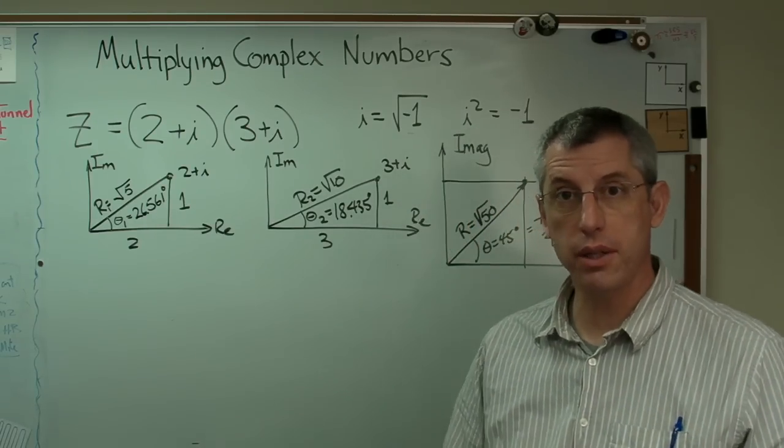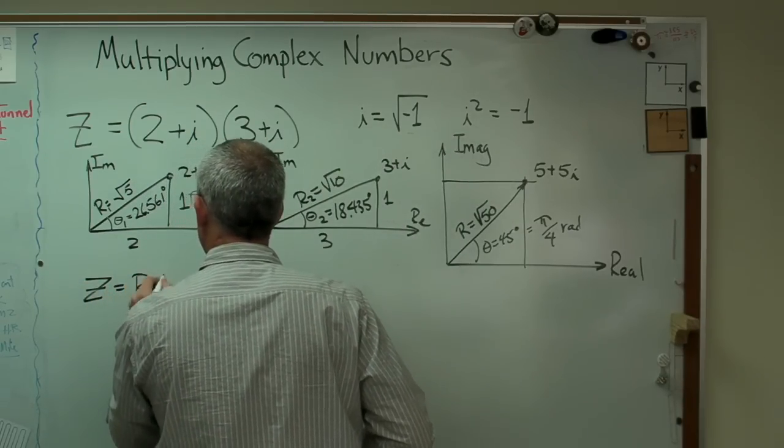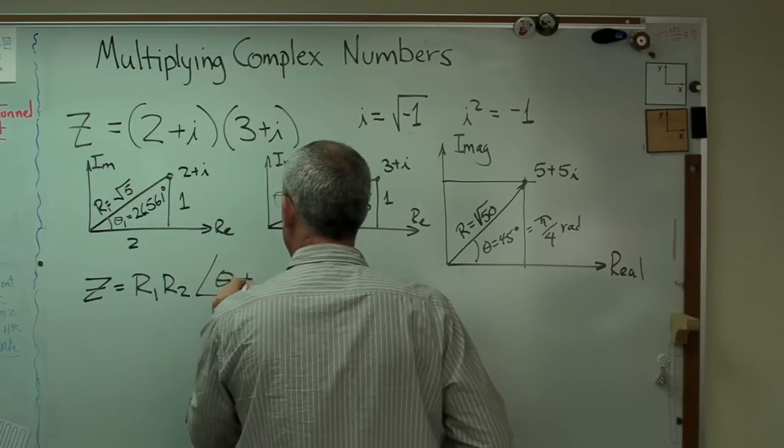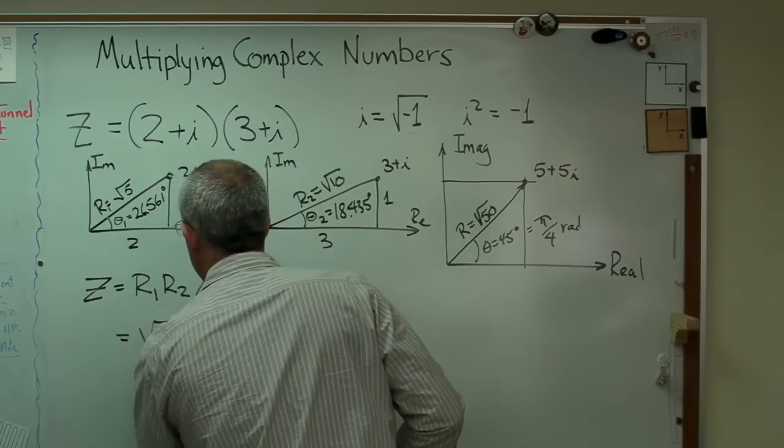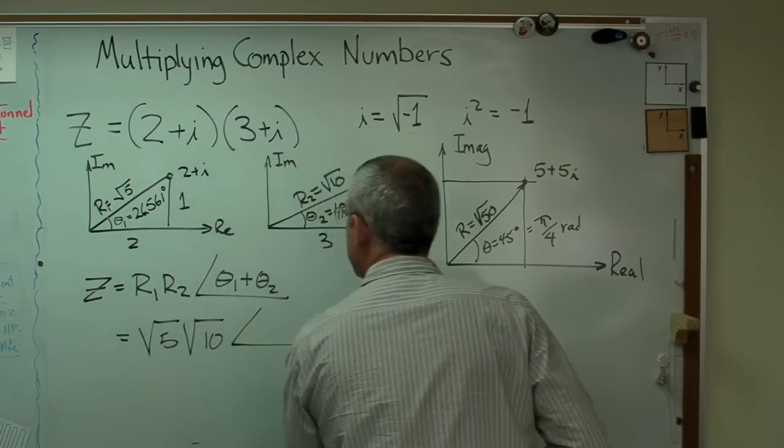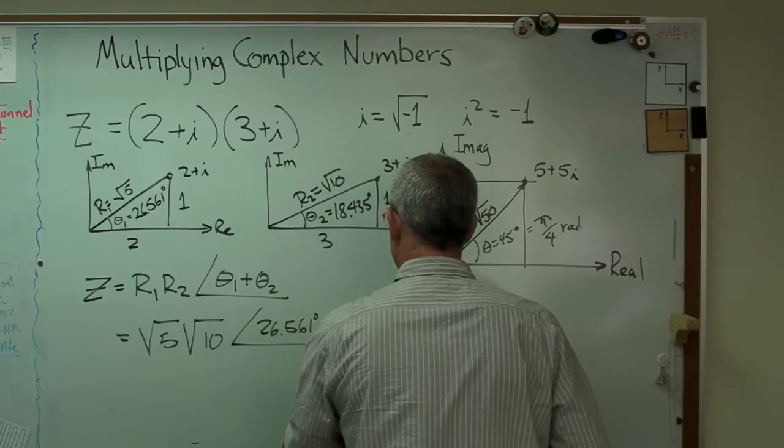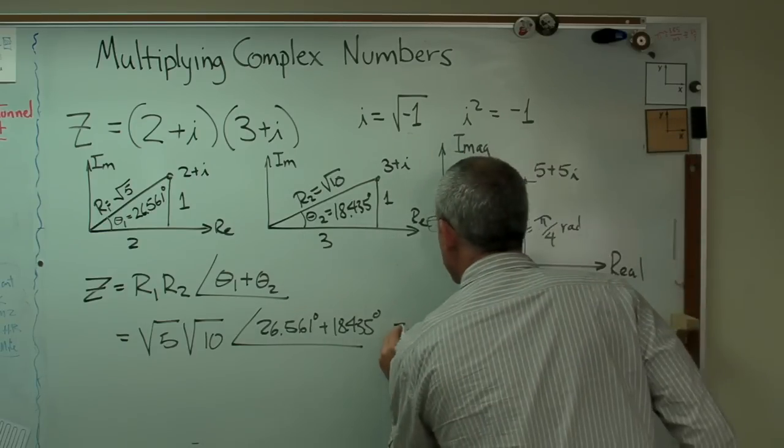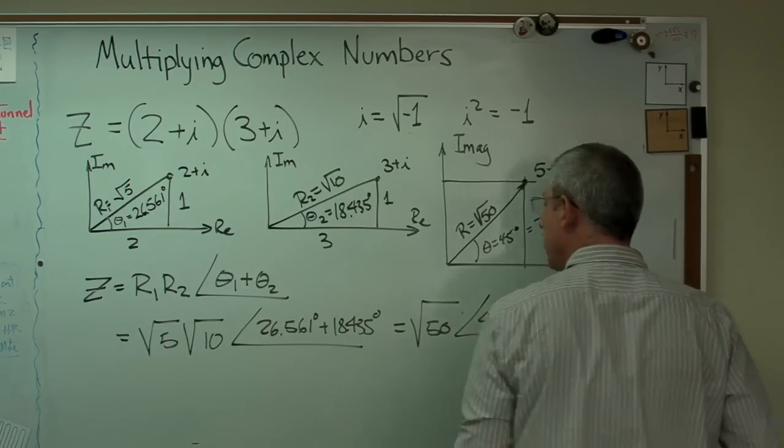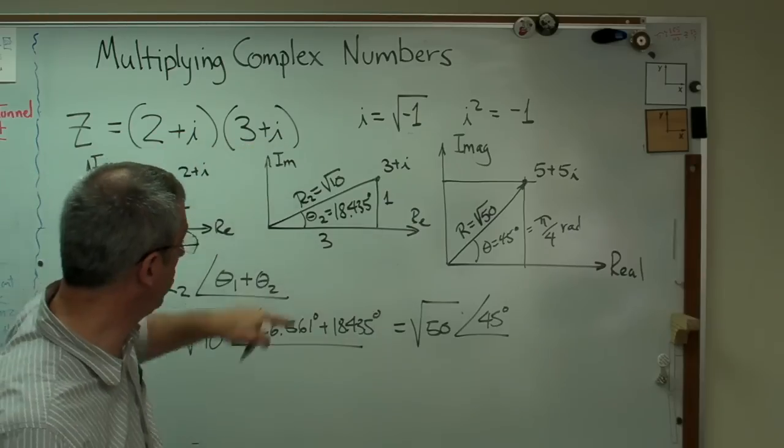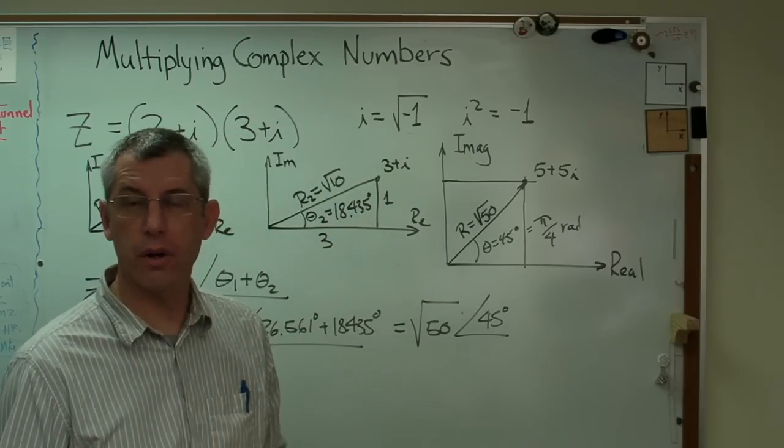That makes that 1 and that 3 on my real imaginary axis. 3 times 3 is 9, 1 times 1 is 1, so this must be the square root of 10. And theta 2 is 18.435 degrees. So far, so good. Now, I'm going to tell you first the process, and I'm going to tell you why it works. The process is z is now going to be r1, r2, and then this angle is going to be theta 1 plus theta 2. Don't worry about why it works for right now. I'll tell you in a second. That's going to be square root of 5, square root of 10, times 26.561 degrees plus 18.435 degrees.